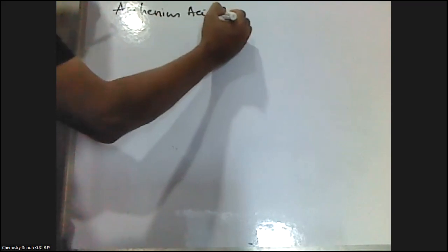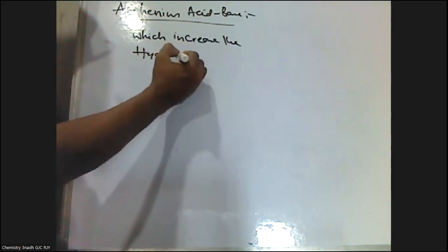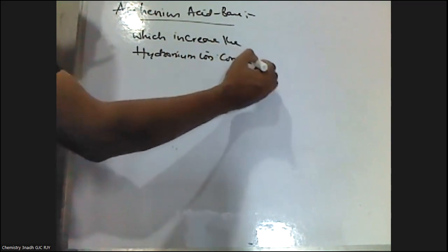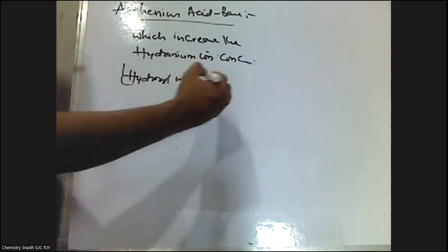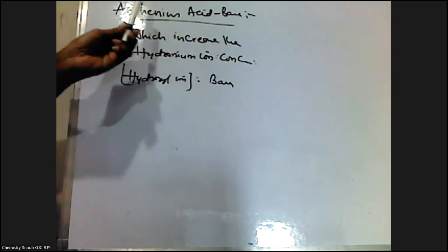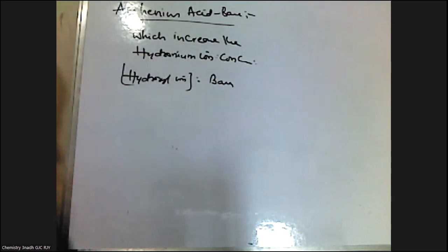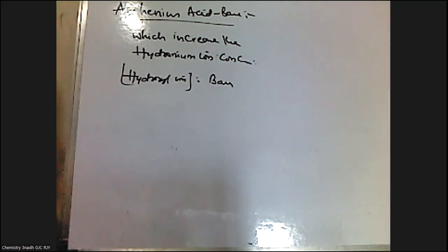According to Arrhenius acid base theory, the substances which increase the hydronium ion concentration are called acids, and those which increase the hydroxyl ion concentration are called bases. The substances which increase the hydronium ion concentration when dissolved in water are called Arrhenius acids, and those which increase the hydroxyl ion concentration when dissolved in water are called Arrhenius bases. But there are certain limitations in this theory — mainly, it is applicable only to aqueous solutions, and it failed to explain the basic nature of substances like ammonia, and the acidic nature of electron deficient compounds such as BF3 or aluminum chloride.